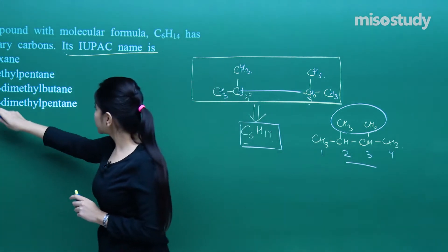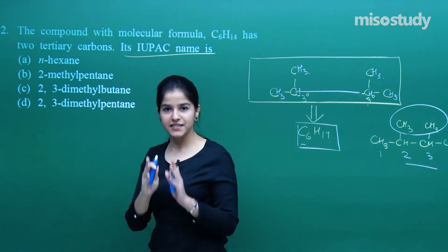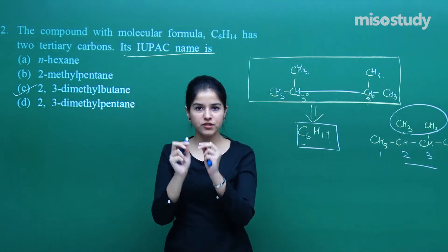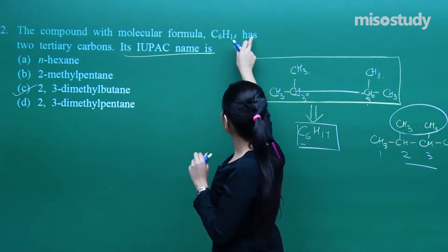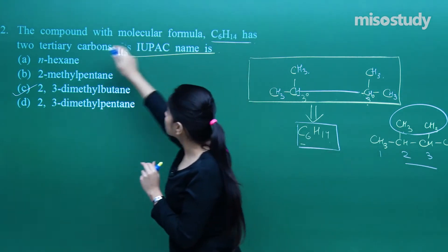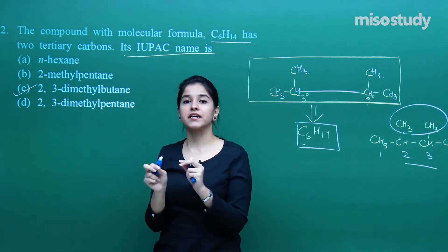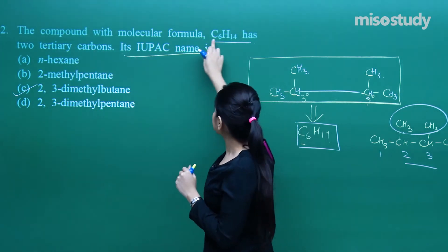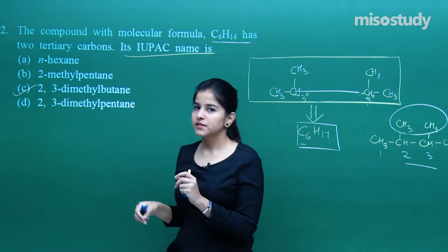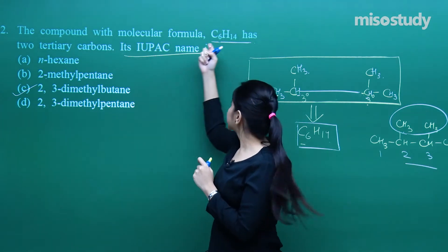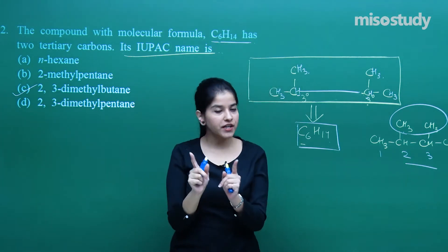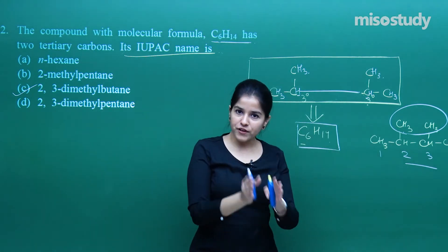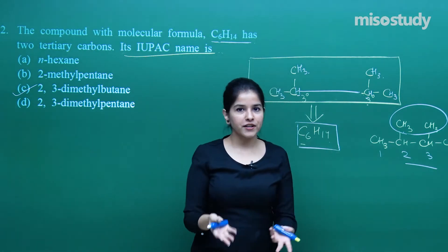I hope everybody has got it — 2,3-dimethylbutane, that is C as the answer. It was also very simple. You just need to have proper knowledge about what all things are required in the question — they asked about 2 tertiary carbons having the formula C6H14. We got 2 tertiary carbons. So you need to first simplify the question, then find out the answer.